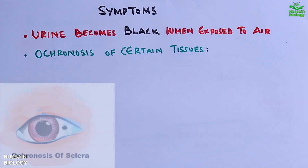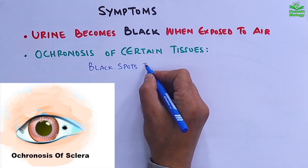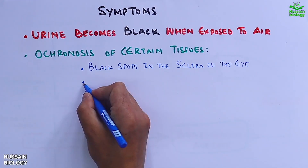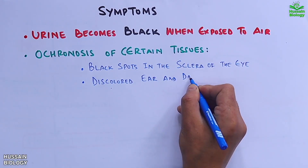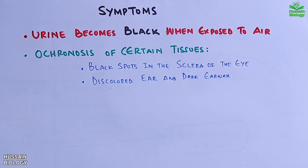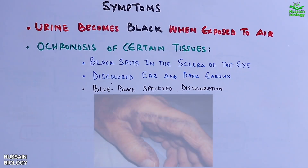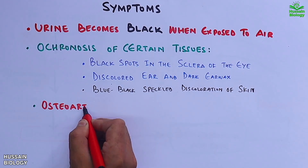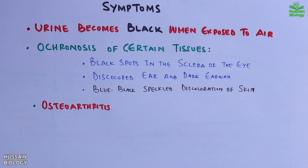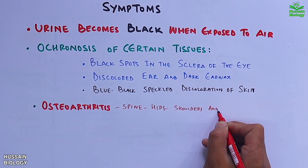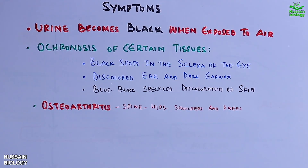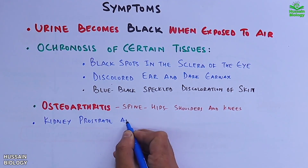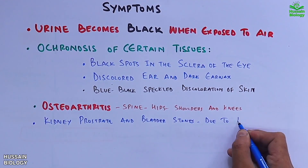Other symptoms include discolored ear and dark ear wax, blue-black scleral discoloration of skin, and osteoarthritis of the spine, hips, shoulders, and knees. Finally, kidney, prostate, and bladder stones are seen due to HGA accumulation.